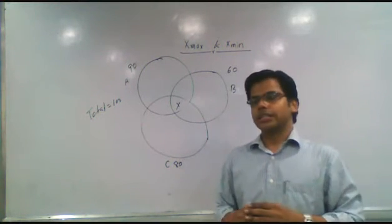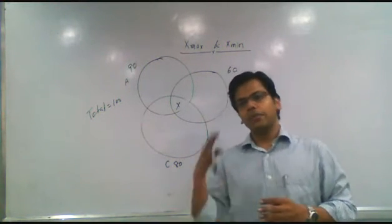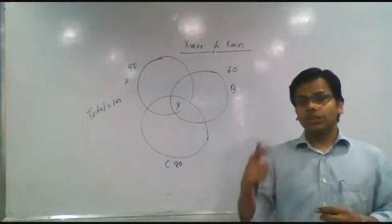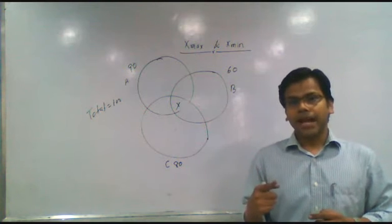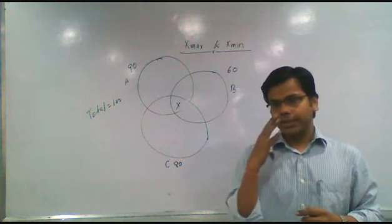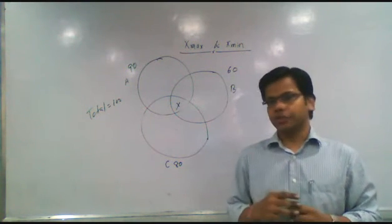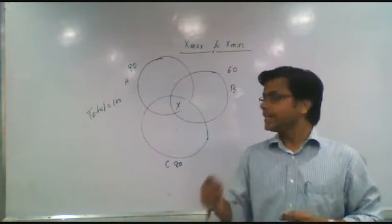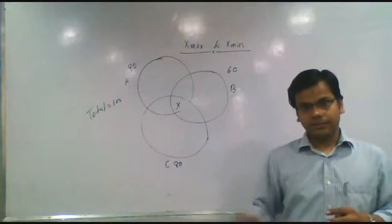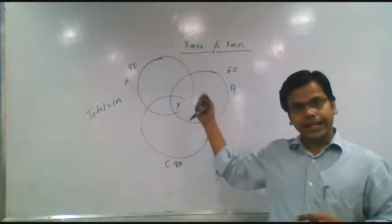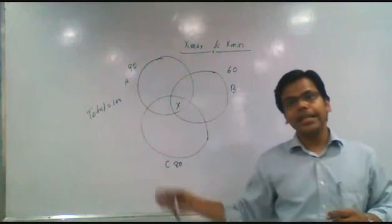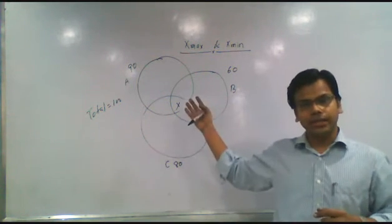Welcome to the world of Knowledge Cell. Today I am going to discuss the concept of x maxima and x minima without making any equations. Here, x is the intersection of three sets. The values are A = 80, B = 90, C = 60, and total is 100.